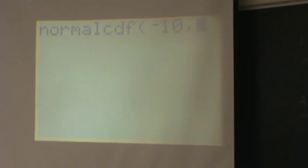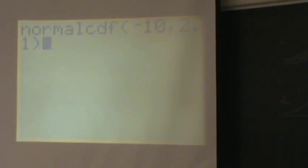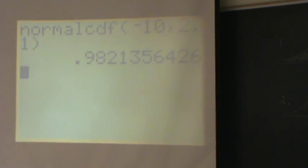We'll put a comma, and we'll put a 2.1 parenthesis, and we will see the probability of 0.9821.